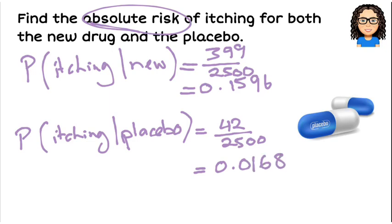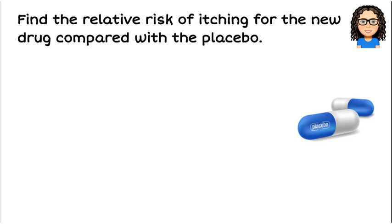So the chance of itching if you're taking the new drug is 15.9%, whereas if you're taking the placebo the chance of itching is only 1.7%. Now I want to go on to find the relative risk.